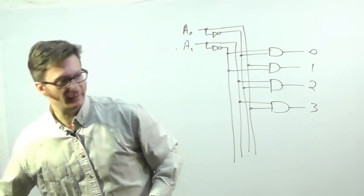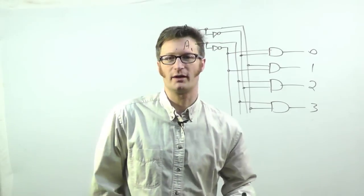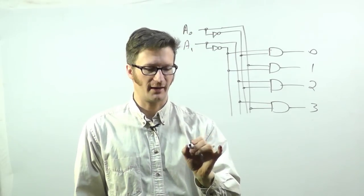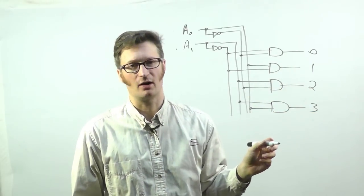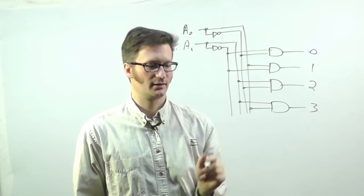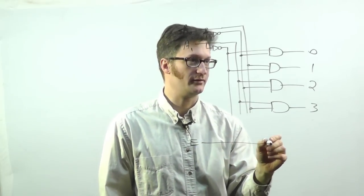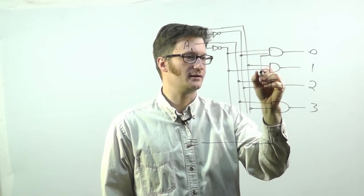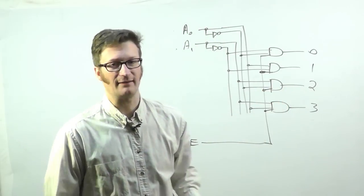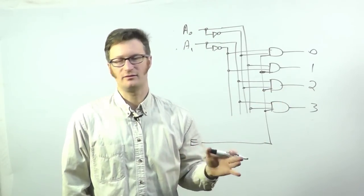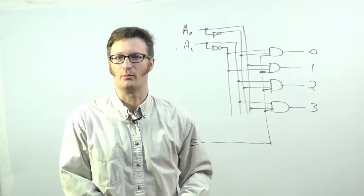Now there's one other input that you'll often find on a decoder. And that is at least one enable input. And so if I have enable here, if I have it low, then none of these should ever go high, no matter what these are doing. And if I have it high, then these should reflect the input. And so all I would do for that is I just run another input into these AND gates. And so that is a two input decoder. A three input decoder just has more AND gates, and a little bit more wiring.